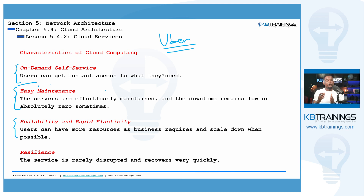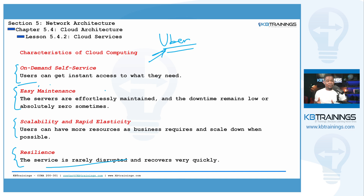Companies like Uber or Lyft are good examples of scalability — when traffic picked up, they were on the cloud and were able to request more computing power to handle all those users at the same time without any problem. If they had their own servers and planned for 50,000 visits but got 500,000, that could have been a disaster. Finally, there is resilience — these cloud services are rarely disrupted, always available, and you can recover very quickly in case of any disruption.